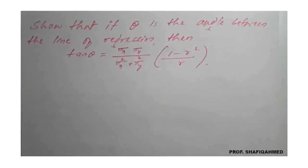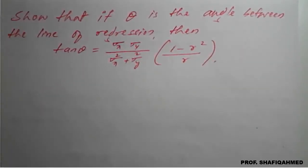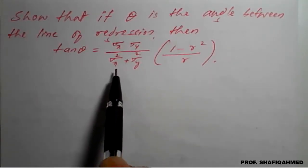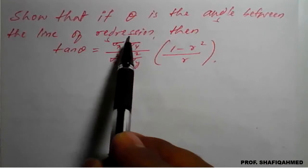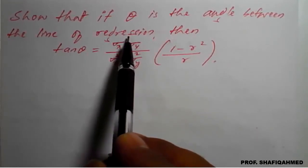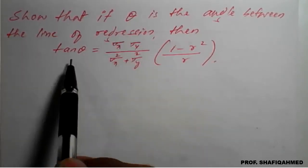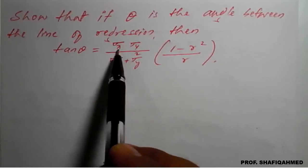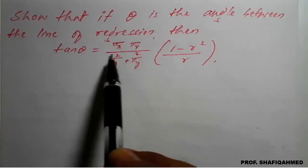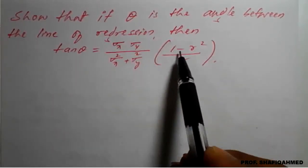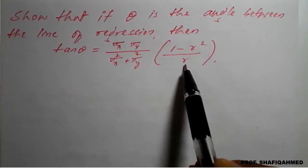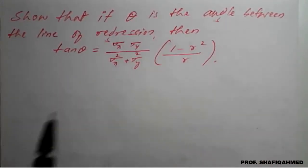Hello students. In today's lecture, we will see one of the standard results using regression lines. We have to show that if θ is the angle between the two lines of regression — y on x and x on y — then tan θ equals σx·σy divided by (σx² + σy²) times (1 − r²)/r. This is the standard result we have to prove here.